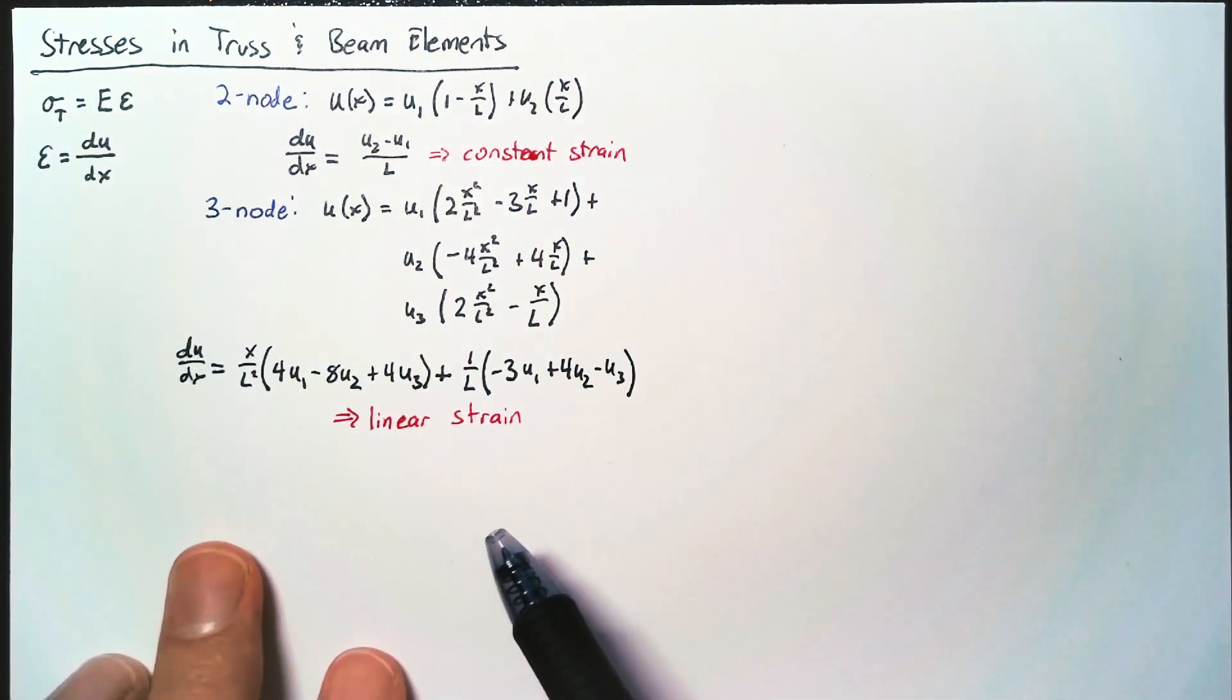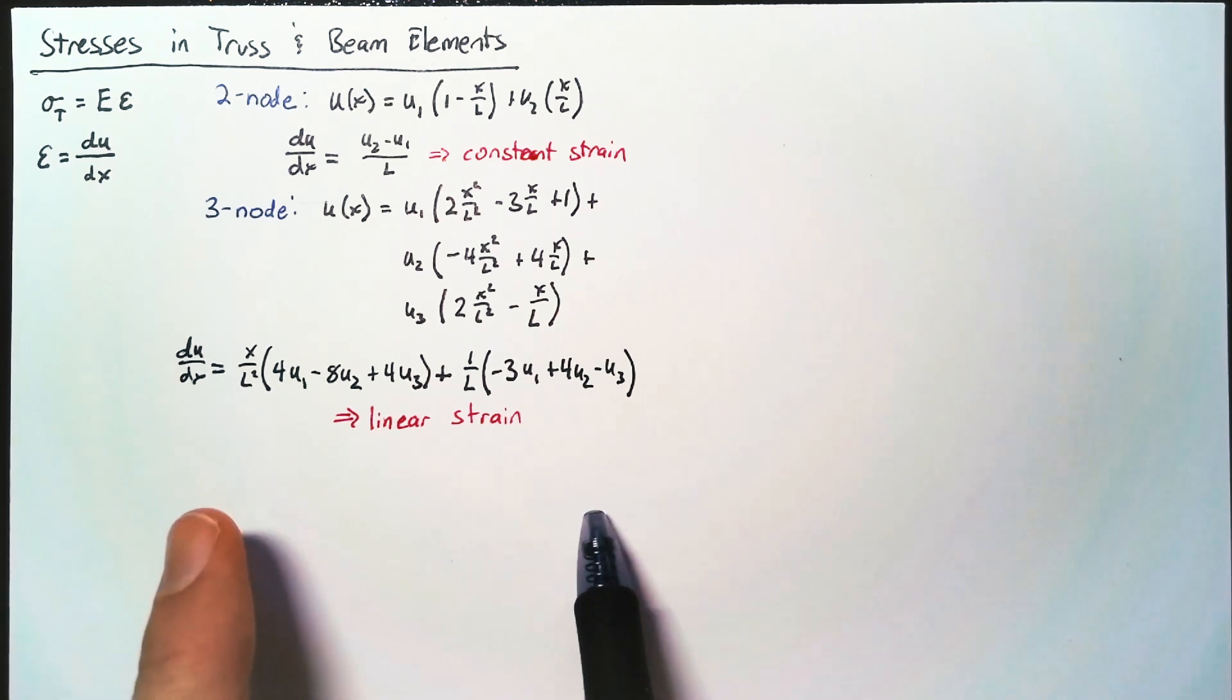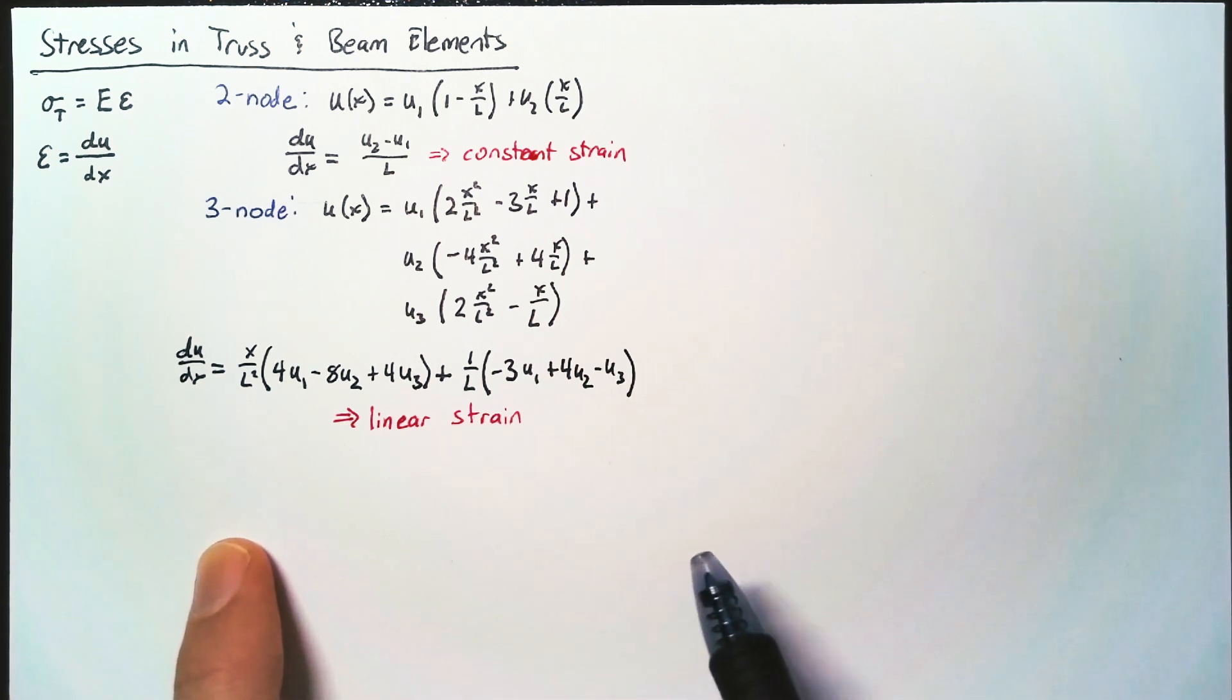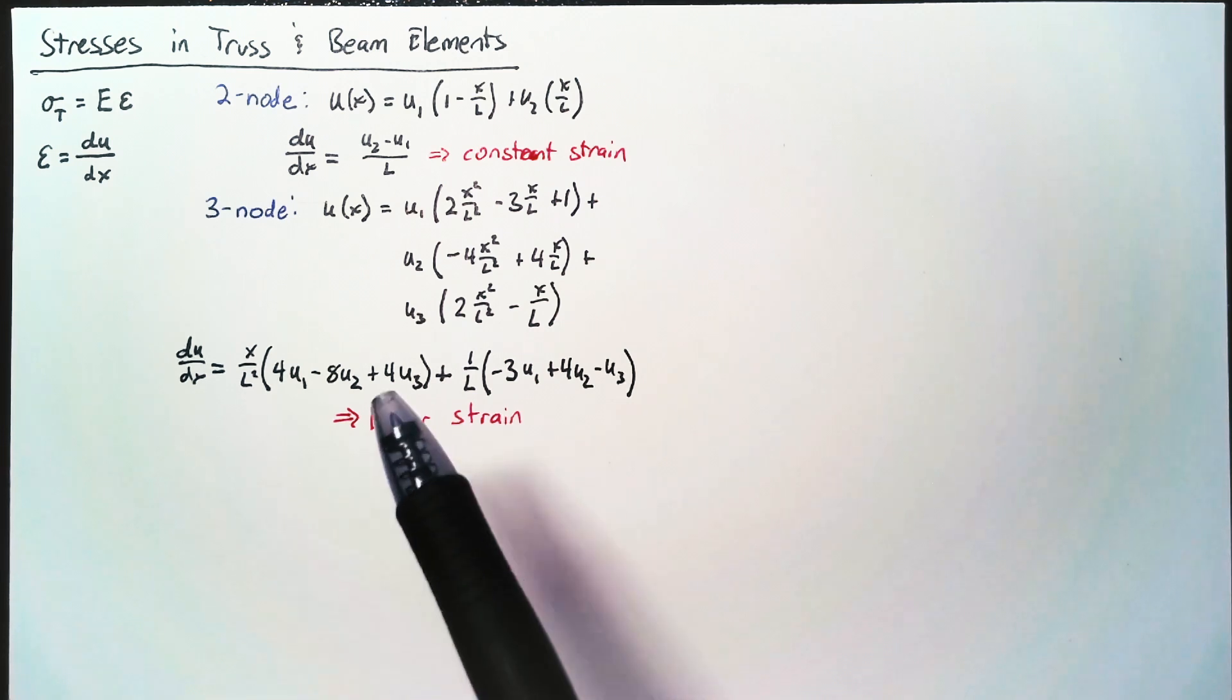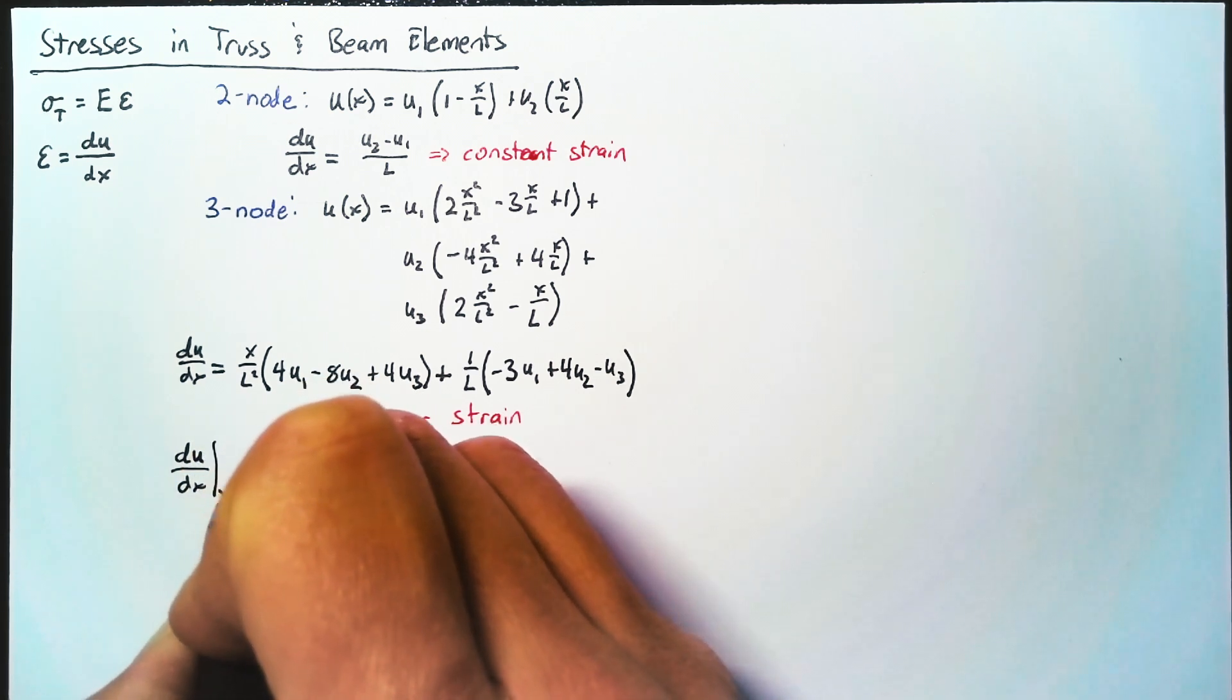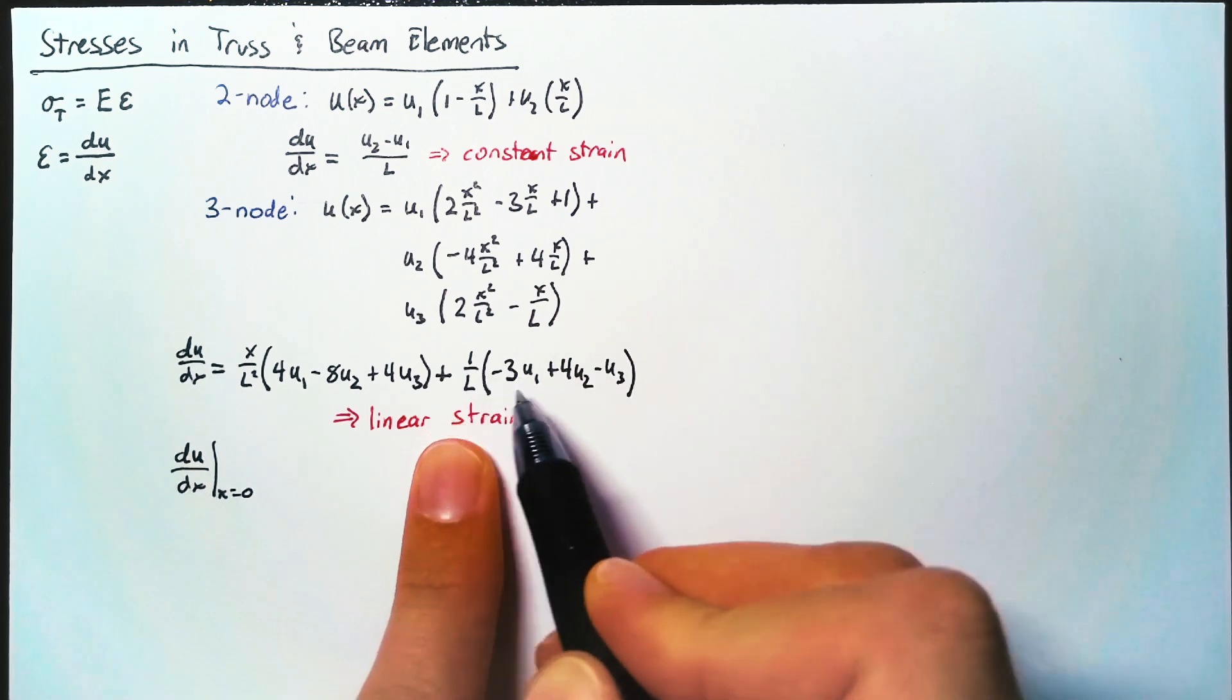So in order to do that, with a linear strain, we just need to look at the two endpoints. We can't have a maximum or a minimum in the middle of our element when we have a linear strain. What we need to do is calculate DU DX when X is equal to 0, which is just going to be this term over here.